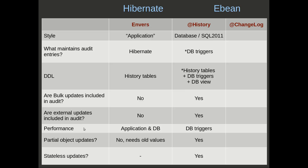In terms of performance, there is a difference in that the audit entries get inserted from the application — so we've got these inserts going from the application server into the database. Whereas on the eBean side, it's all database-centric or database server-side. The triggers will fire and get their data locally in the database to insert into the history tables.